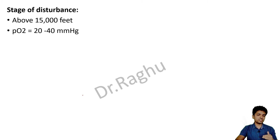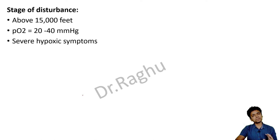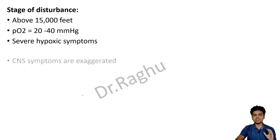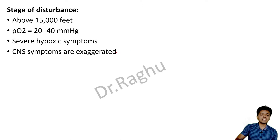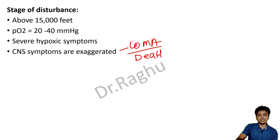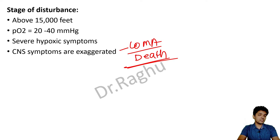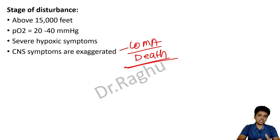Above 15,000 feet is the stage of disturbance, where partial pressure of oxygen falls very low to 20–40 mmHg. The person can have severe hypoxic symptoms, and the CNS symptoms that began in the stage of reaction become exaggerated — sometimes so much so that the person may go into coma and ultimately death may occur. So depending on altitude, we have three stages: indifference, reaction, and disturbance.